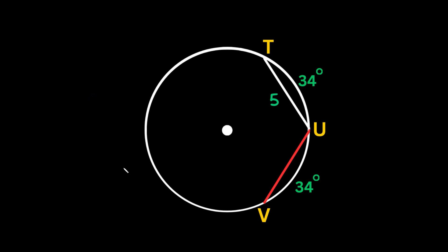In the next example, we're finding a chord length shown in red. We're given that two arc measures are both 34 degrees. If two chords on the same circle have the same arc measure, the chords are congruent. So if one chord is 5 units long, the red chord is also 5 units long.